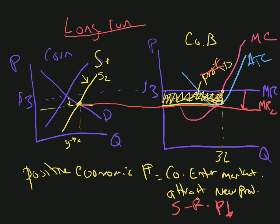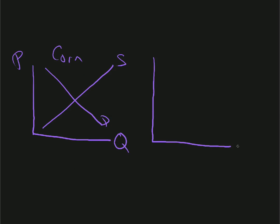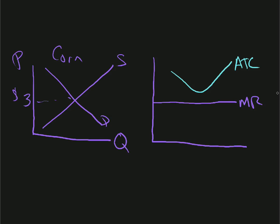Profits attract new suppliers. One more model to think about. We draw a market — let's say the price is $3 — and we end up with a marginal revenue line here. We draw our cost curves in: an average total cost curve up here. Look how high that is — we can already tell something's going to happen. We have a marginal cost curve that comes down and cuts the average total cost. Marginal cost equals marginal revenue is how we figure out how much to produce.